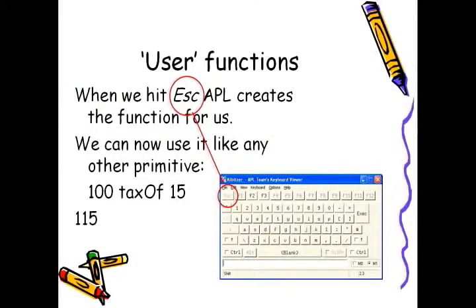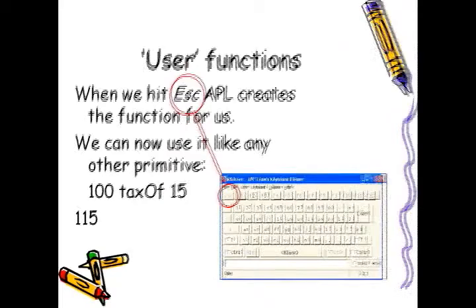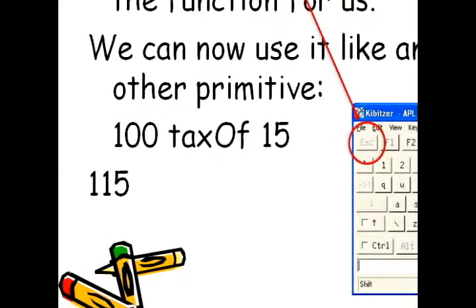When we're finished writing the function, we hit escape, and APL creates the function for us. We can now use it just like any other primitive. And if we type 100 taxOf 15, APL will compute the tax properly for us, and the total amount will be 115.